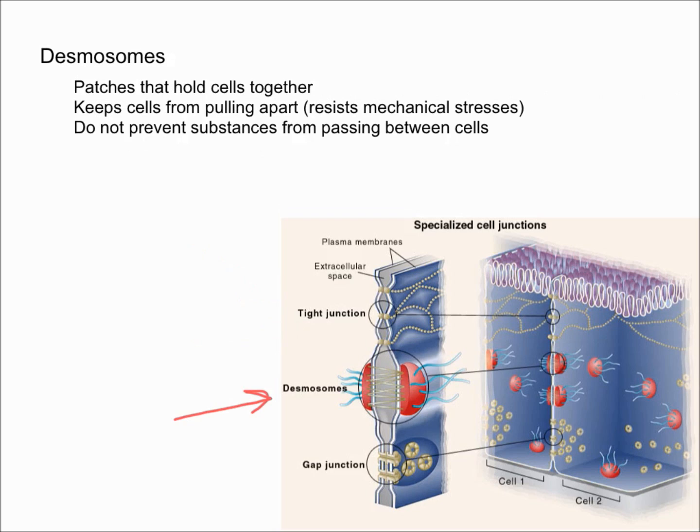Desmosomes are essentially patches that hold cells together. The purpose of desmosomes is to keep cells from pulling apart—in other words, they resist mechanical stress. However, one thing to remember is that they do not prevent substances from passing between cells, so they don't have the same function as tight junctions.